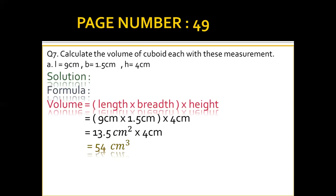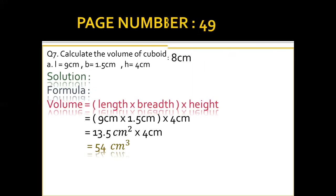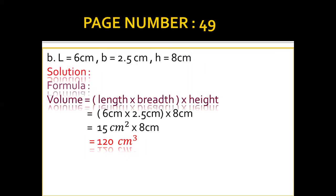Part B of question 7: length is 6, breadth and height are given. Write the formula, put the values in the formula. Length × breadth × height: 6 cm × 2.5 × 8. After getting the multiplication of these three numbers, the volume is 120 cm³.